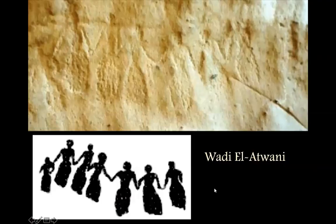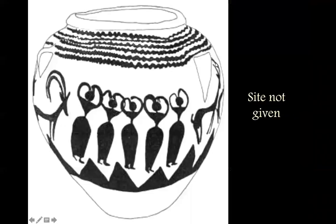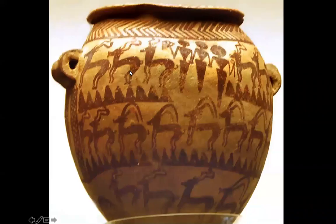Here's another example from Wadi El Atwani. Kind of hard to make out from the photo, so they've supplied a sketch showing women dancing hand in hand. And this one's a little bit more unusual because you have multiple invokers — they aren't usually placed side by side in this way. So this is kind of unusual: a group of dancing invoking women.